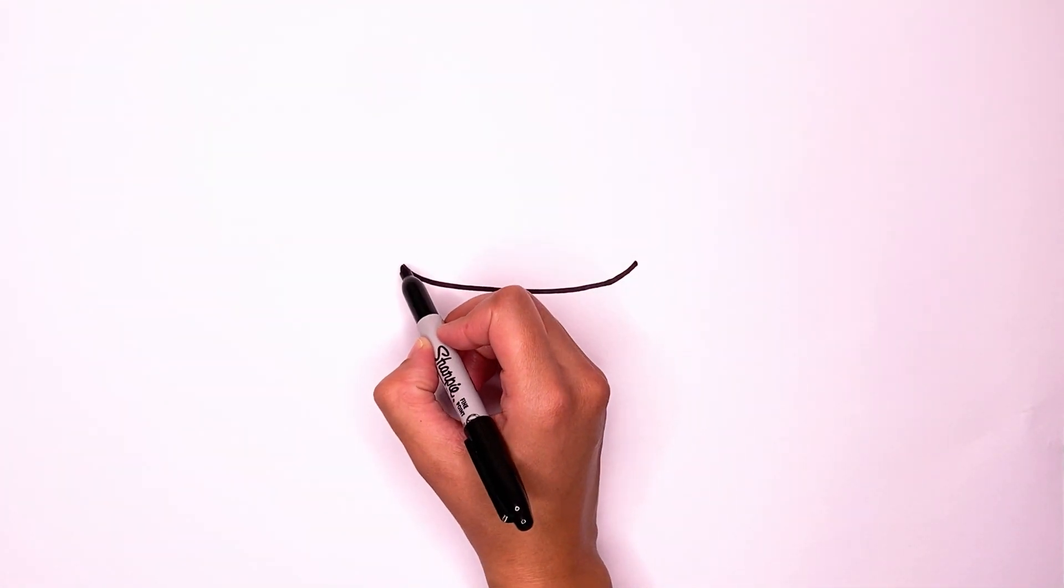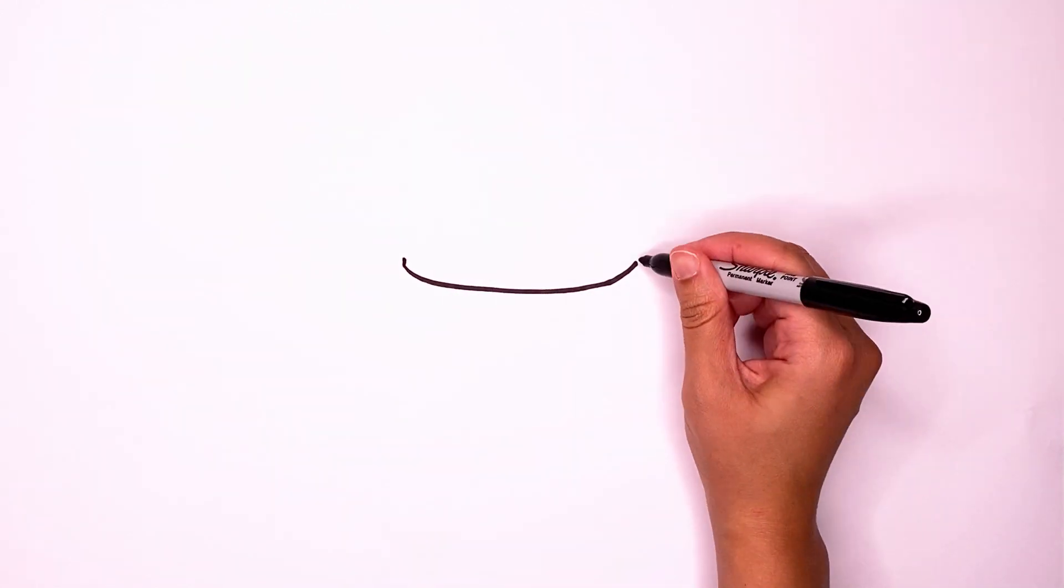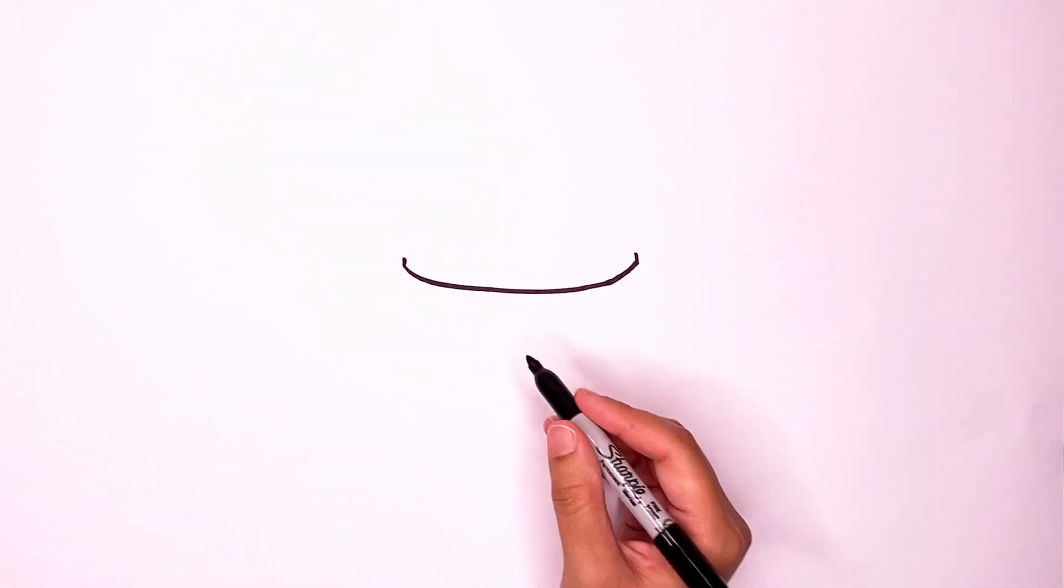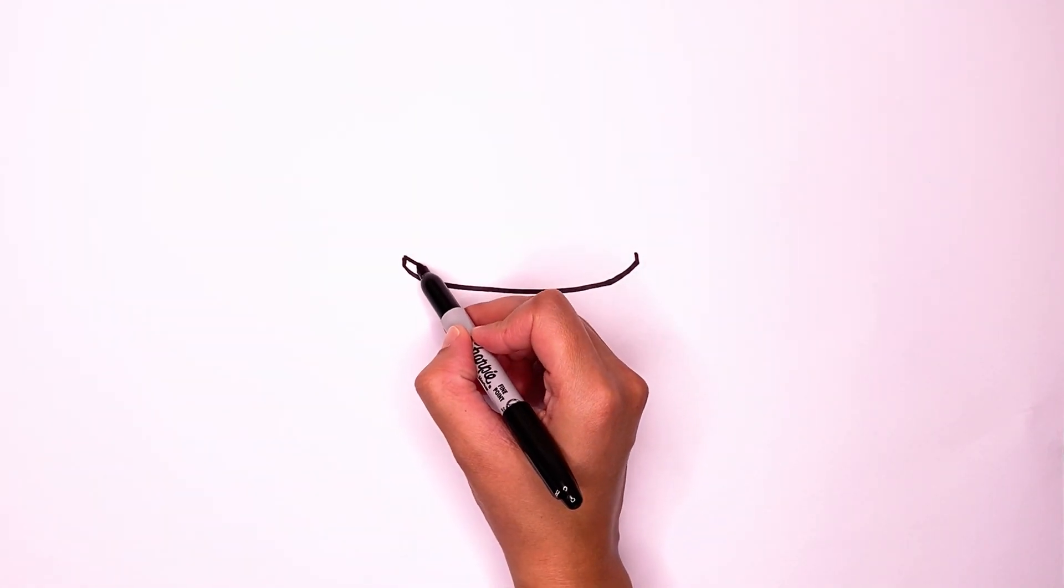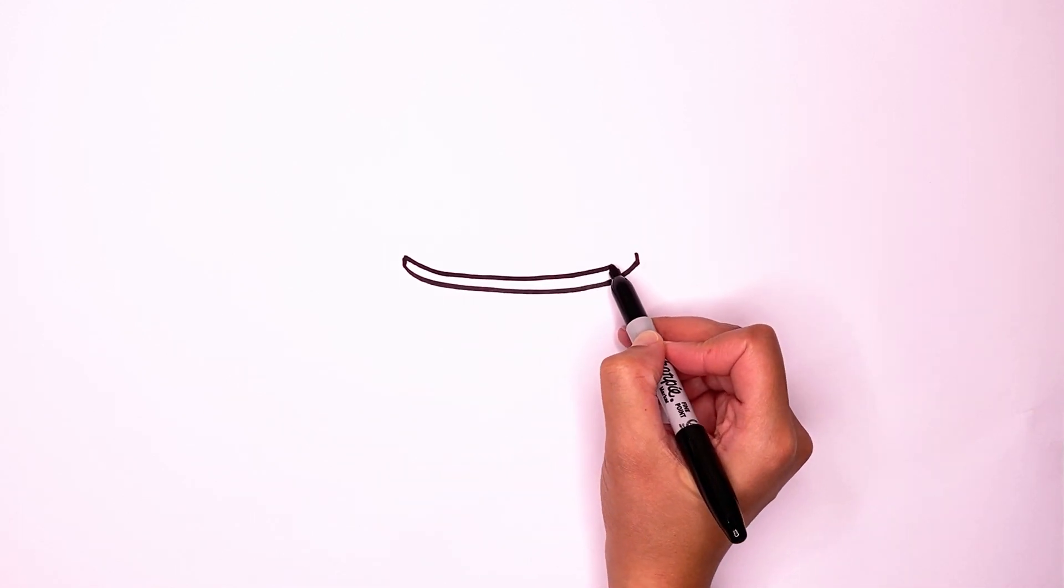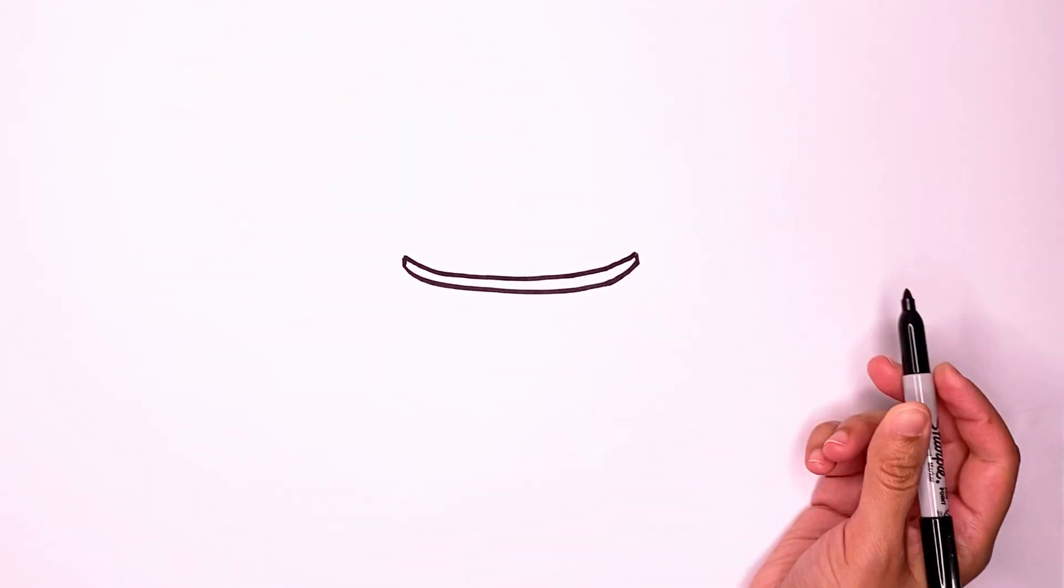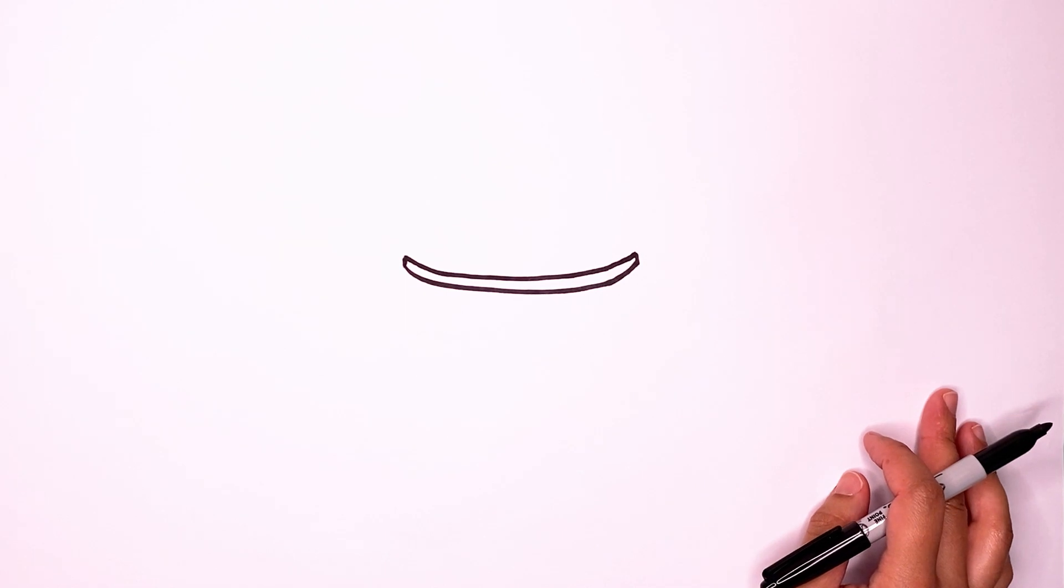Once you have that curve, we're going to draw a line up on each side, and then we're going to go and make kind of the same curve, but don't touch it until you get to the other side. Perfect.